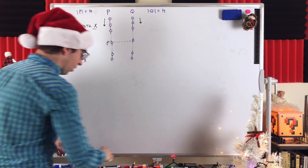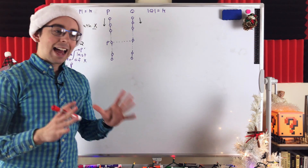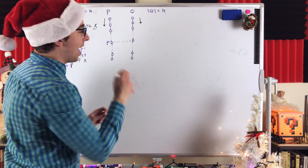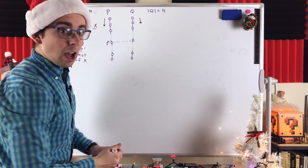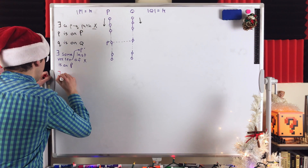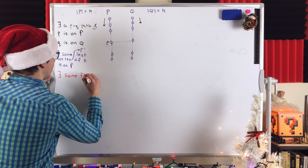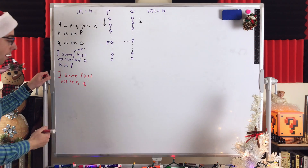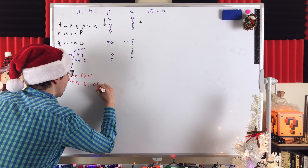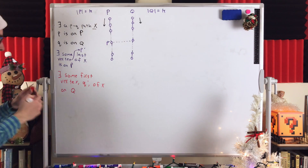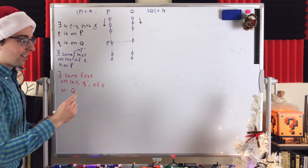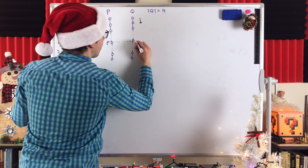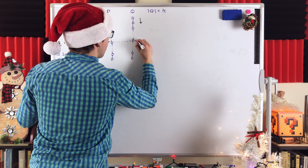We make a very similar argument about Q. We want to identify the first vertex of path X that is on Q — the moment that path X gets to Q, and that's where we want it to stop. So there exists some first vertex Q prime of X on path Q. That's the first vertex where it arrives at Q, and we'll call it Q prime. We label that vertex Q prime in our diagram.